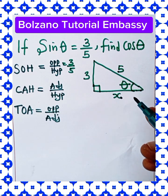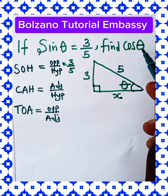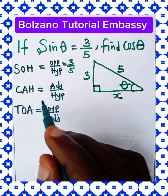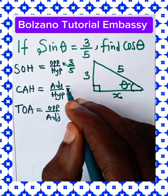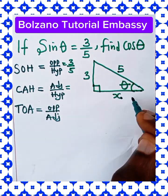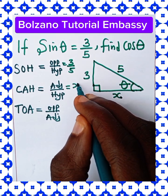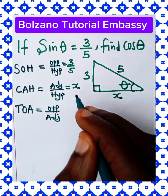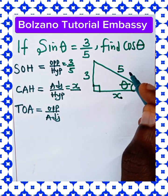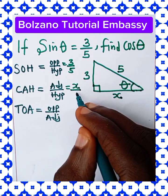Now we're asked to find cos theta. And cos theta, represented as CAH, is adjacent over hypotenuse. The value of the adjacent side is x, which we don't know yet. The hypotenuse is 5.